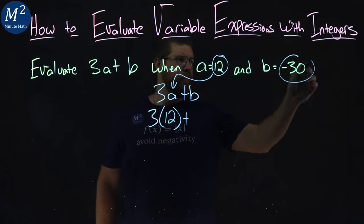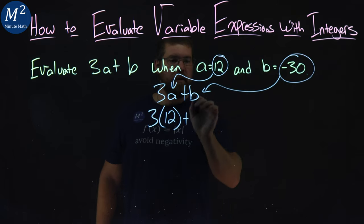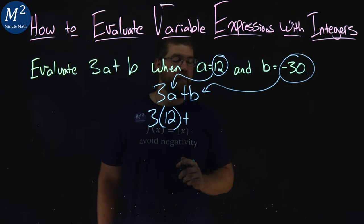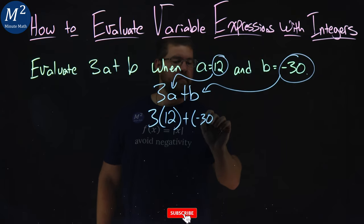They said b is a negative 30, same thing. Negative 30 goes in for that b. Negative 30 here.